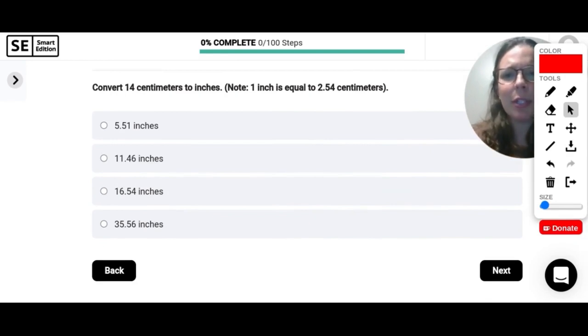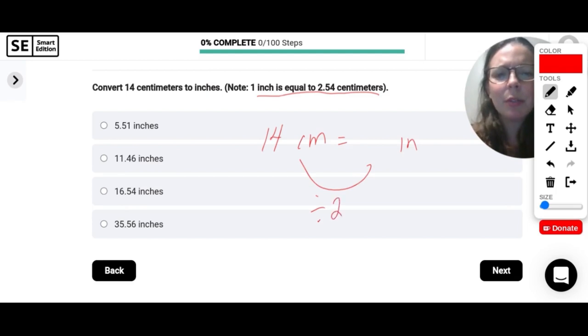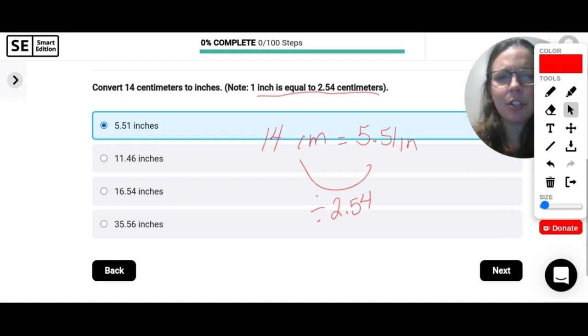Let's convert 14 centimeters to inches. So it gives us our conversion here, which is nice. One inch is equal to 2.54 centimeters. So 14 centimeters to inches. We need to divide by 2.54. So when we divide, we will get 5.51 hundredths. So that is our inches.